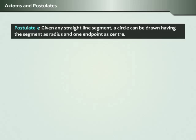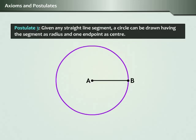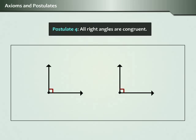Postulate 3: Given any straight line segment, a circle can be drawn having the segment as radius and one end point as center. Postulate 4: All right angles are congruent.